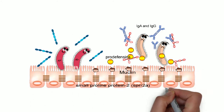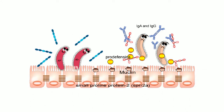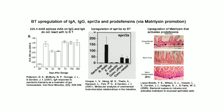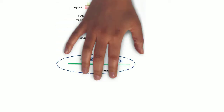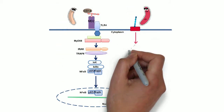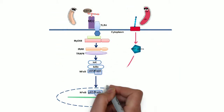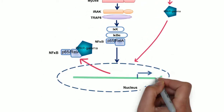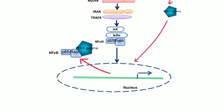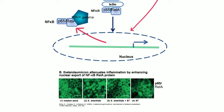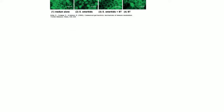Second, they stimulate expression of small proline-rich protein 2, SPRR2A, that reinforces the tight junctions joining the intestinal epithelial cells. Finally, Bt triggers the PPAR-gamma pathway, intercepting activated NF-κB p65 component by forming a complex and exporting them out of the nucleus, stopping them from pro-inflammatory protein expression.